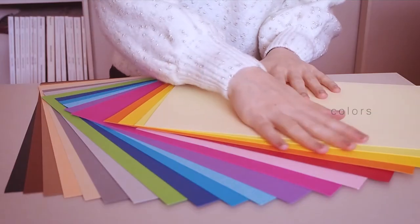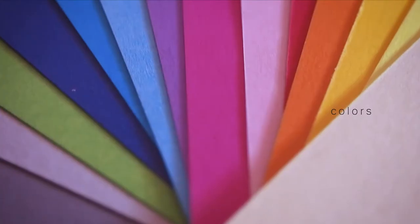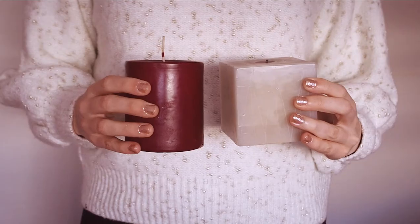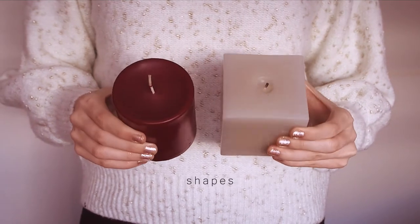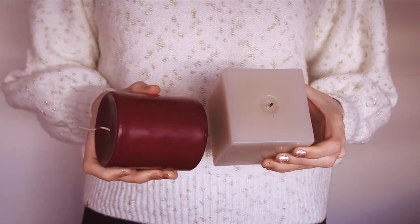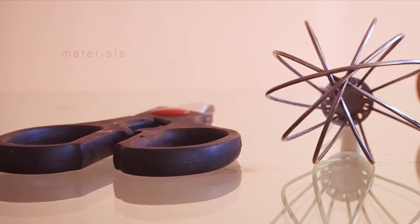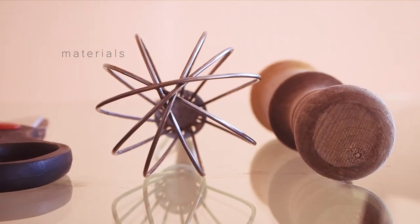This exercise is about coming up with an attribute or characteristic and searching for elements that share that attribute in your surroundings. The attribute could be a shape, a material, a texture, a size, a color, etc.